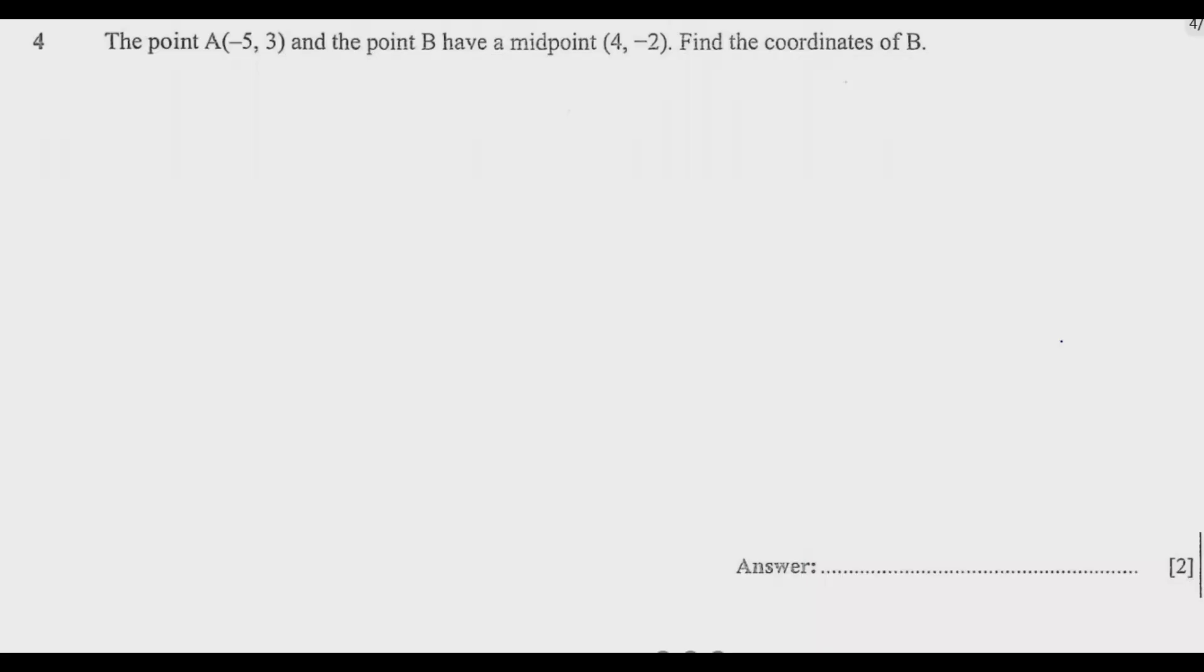So question four reads: The point A which is negative five comma three and the point B have a midpoint four comma negative two. Find the coordinates of B.